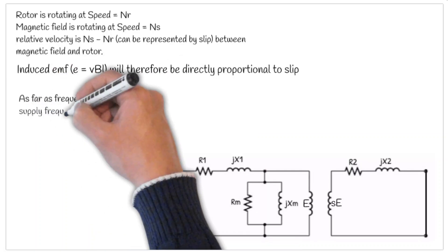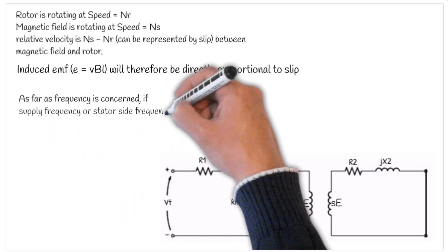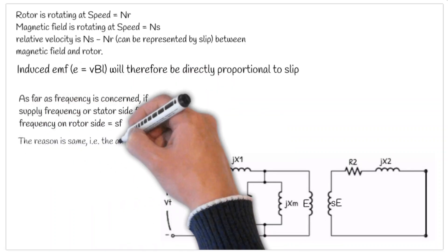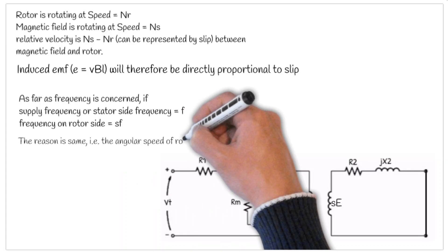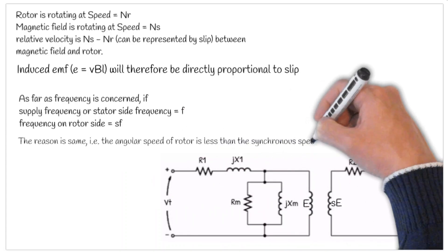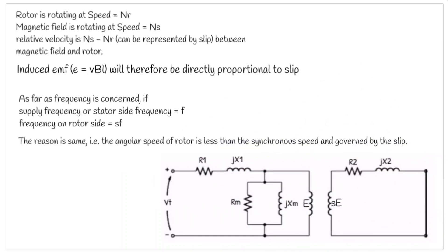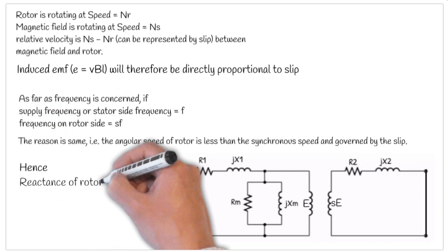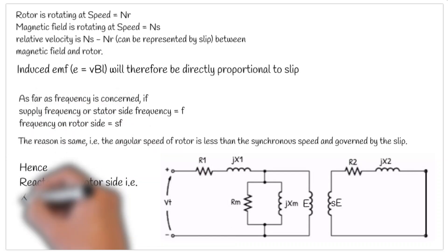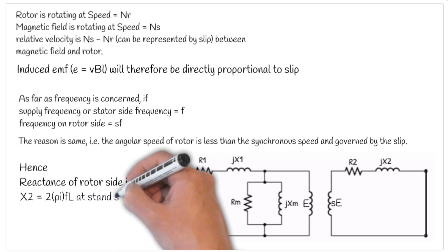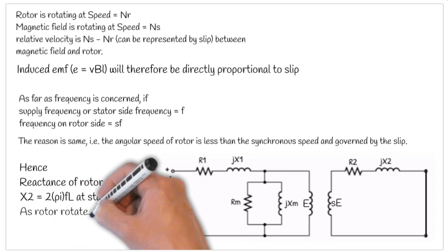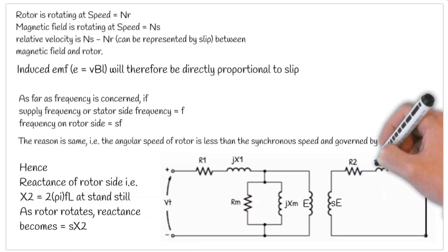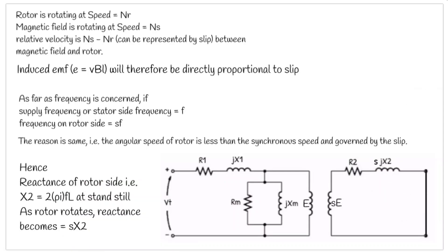As far as frequency is concerned, if F is the frequency on the stator side, S times F will be the frequency on the rotor side. This is because the rotor is rotating at a different speed from the synchronous speed. We know that reactance equals 2π F L, so if frequency becomes S times F, the rotor side reactance will become S times X2.